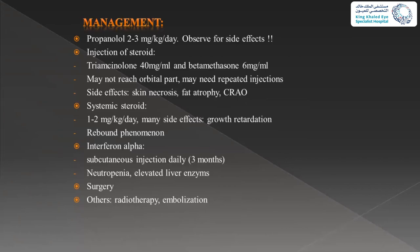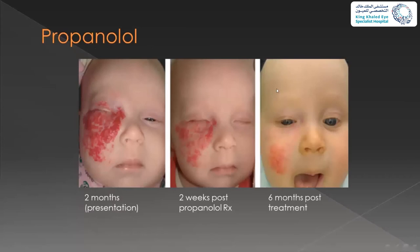Systemic steroids can be used if propranolol is unavailable, up to 1–2 mg/kg/day, but the most reported side effect is growth retardation due to the rebound phenomenon in children. Other entities used in the past, like interferon alpha, are not popular nowadays. Surgery is a nightmare — you cannot remove the whole lesion. Previously, radiotherapy and embolization were tried. This is an example of a child with hemangioma: two months at presentation, two weeks after starting propranolol, and six months post-treatment showing dramatic improvement. We usually continue propranolol for the first two years of life until the patient enters the natural regressive phase.